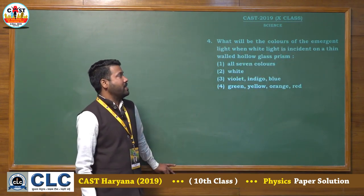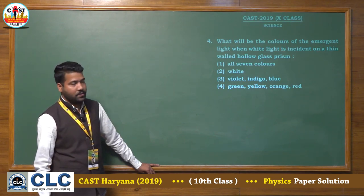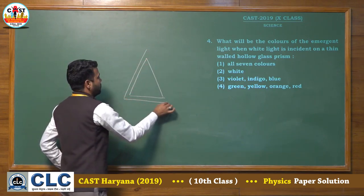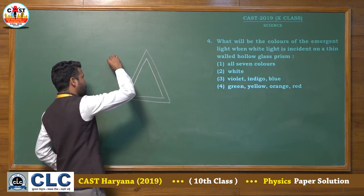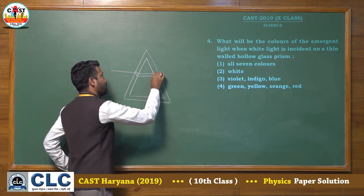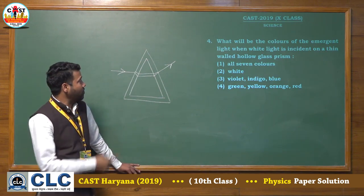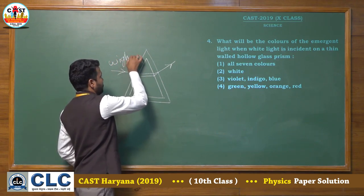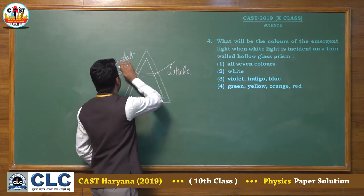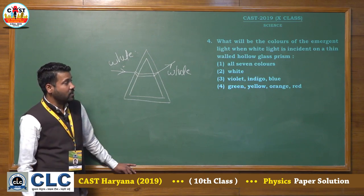Fourth question: what will be the color of the emergent light when white light is incident on a thin-walled hollow glass prism? A hollow glass prism has an air part in the middle. When a light ray is incident on it, it first splits, but in a hollow thin prism the ray diagram shows that if white light enters, the emergent light will also be white light. So the right answer of this question is the second option.